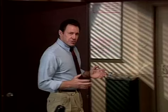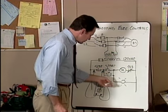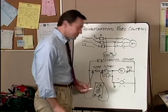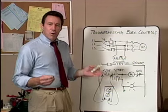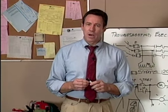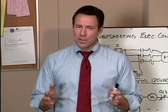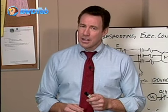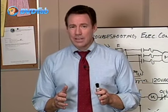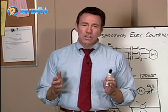Troubleshooting the logic section of the control system usually entails solving two possible problems: one being a short in the control circuit, and the other being the troubleshooting of the operation of the circuit itself because of some component malfunction. A short circuit condition is perhaps one of the most difficult problems to find. In a control system, we have to find it, and to do this, we're going to create a logical method.